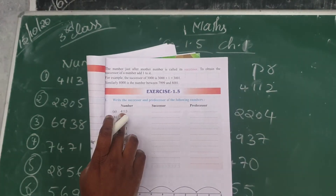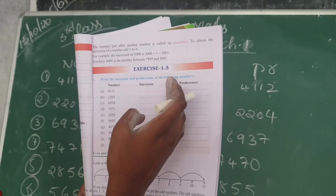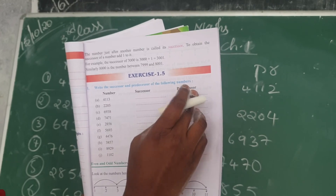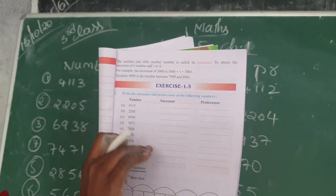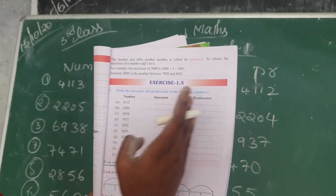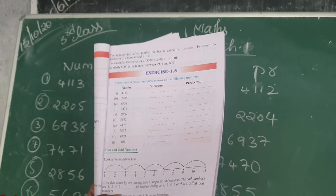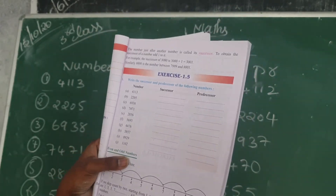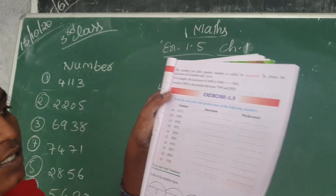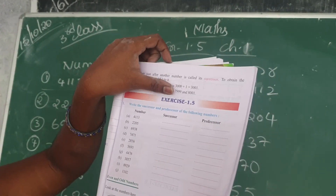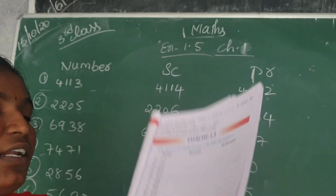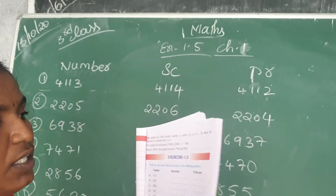Successor means, for each number, plus 1 — or write the after number. Predecessor means before number — subtract 1 and write. Next class I will explain even numbers and odd numbers. Exercise 1.5 — complete it in your textbook. Write in FL and write homework also.